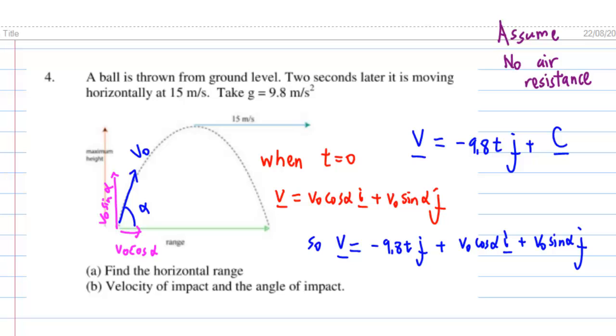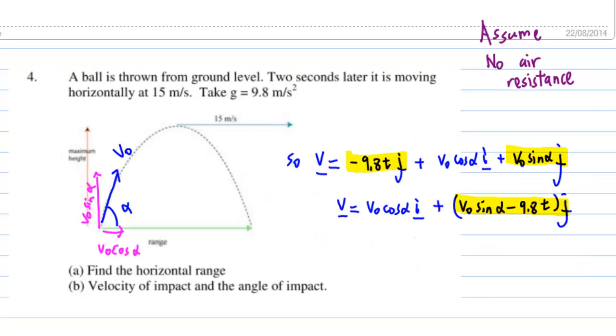Putting the C back, we get V equal to negative 9.8 t j plus V0 cosine alpha i plus V0 sine alpha j. Combining the j component, we get V equal to V0 cosine alpha i plus V0 sine alpha minus 9.8 t j.